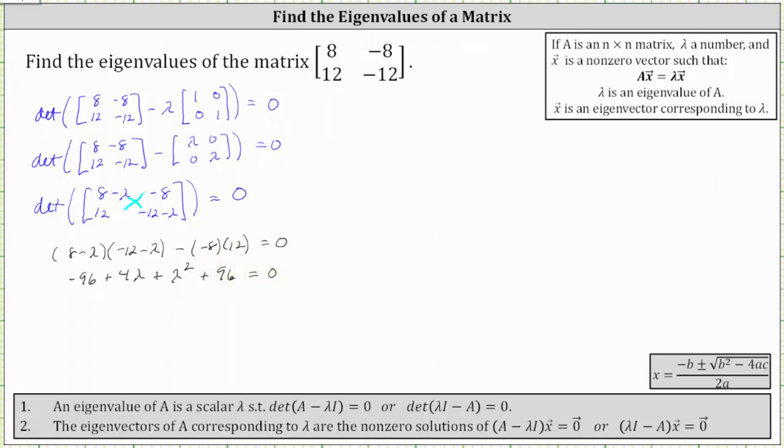Combining the constants, notice -96 plus 96 is zero, leaving us with the equation λ² + 4λ = 0.